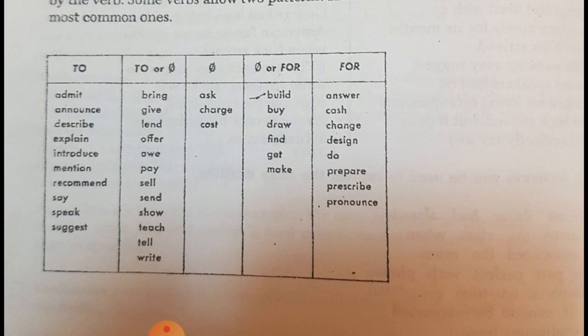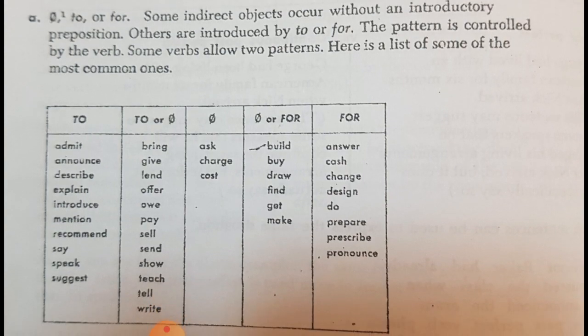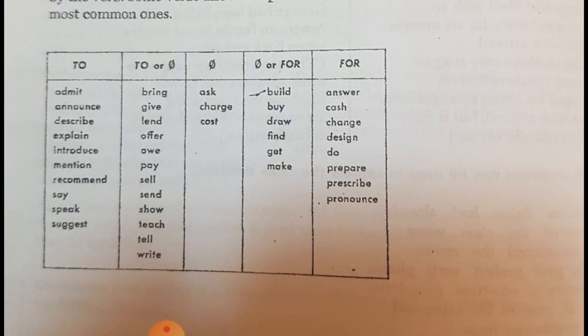Some other verbs must take only FOR. You can say answer, cash. The indirect object must come after the direct object. So inshallah in the video you will see it.